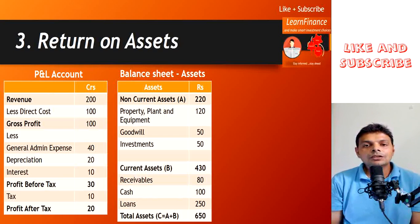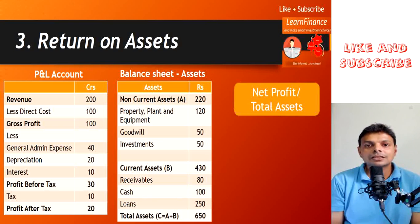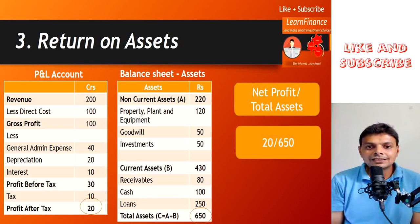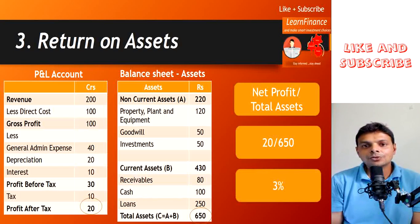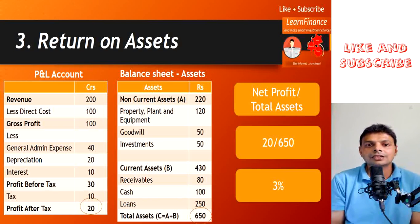The next important ratio is return on assets, which tells you how much money a company is making relative to its total assets. In our example, the company had total assets of 650 crores and was making a profit of 20 crores — a return of 3%. Whether that 3% is good or bad depends on the sector: capital-intensive sectors show a low percentage, while IT or labor-intensive sectors show a higher percentage because they don't have big assets on the balance sheet.